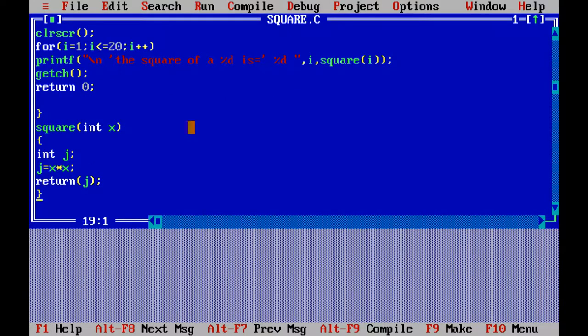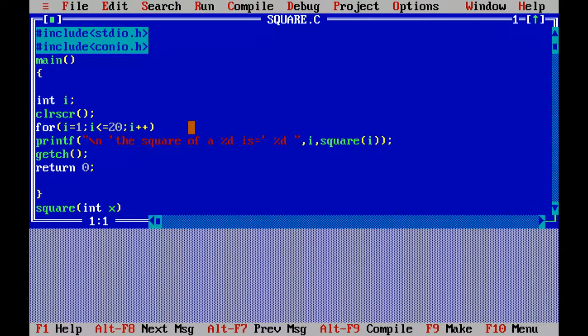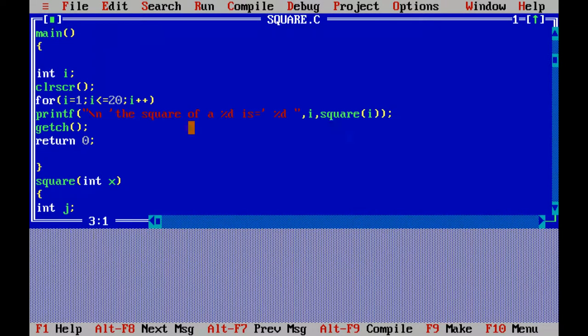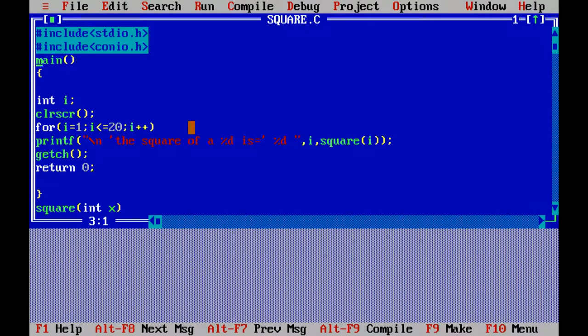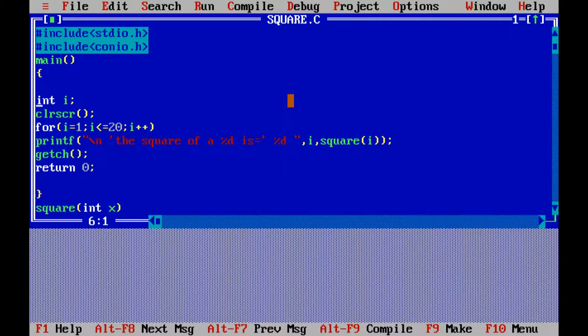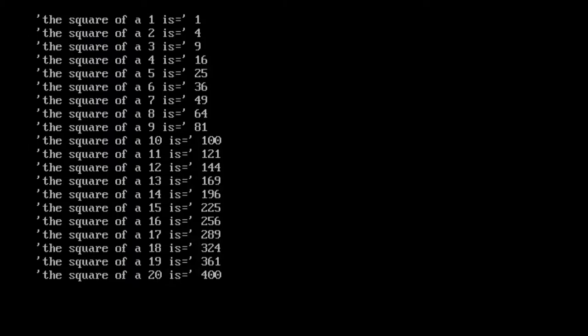So that is about a program with the help of using function to calculate first 20 numbers square. One more time we will execute.